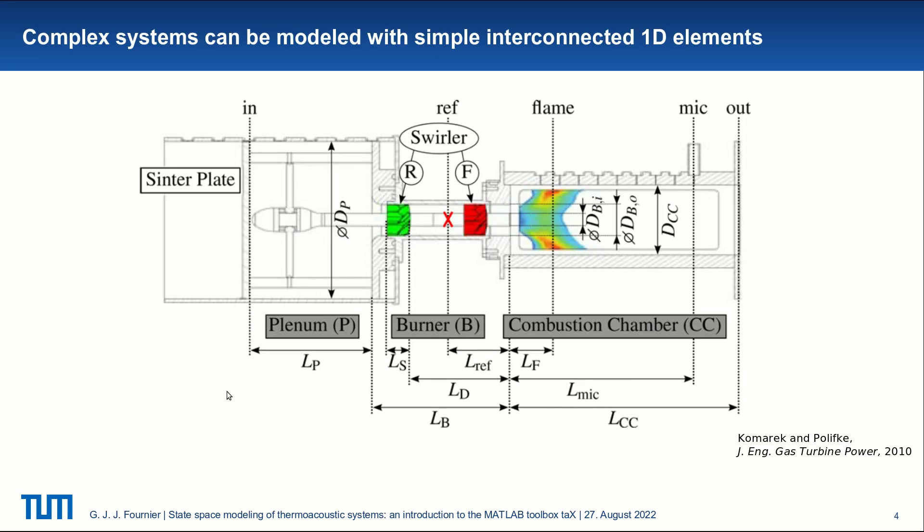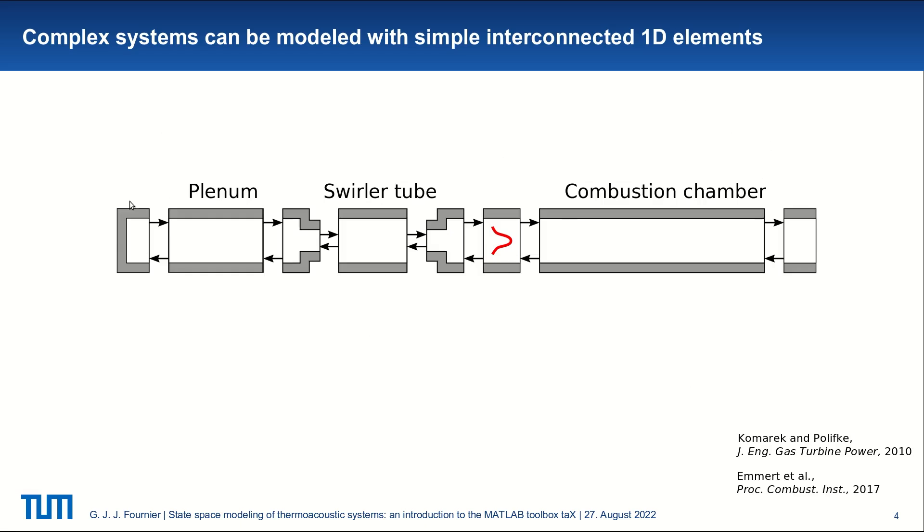The idea behind network models is that complex systems can be modeled with simple interconnected 1D elements. We have here, for example, the BRS burner that was experimentally investigated by Komarek. So we have a plenum, a swirler that can be mounted in rear or front position, a combustion chamber. And this whole system can be modeled with the following networks.